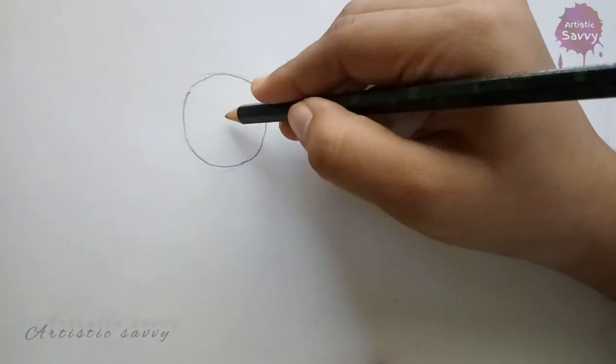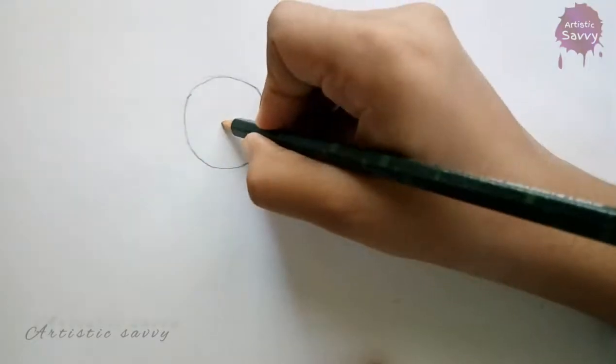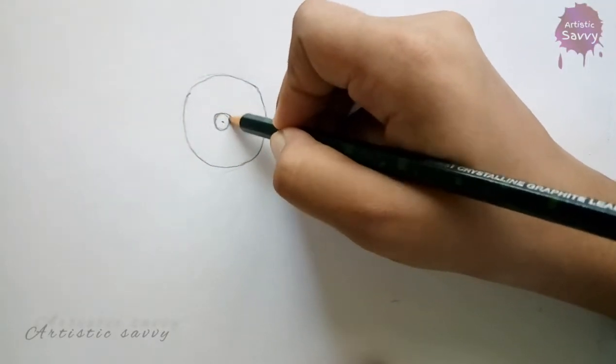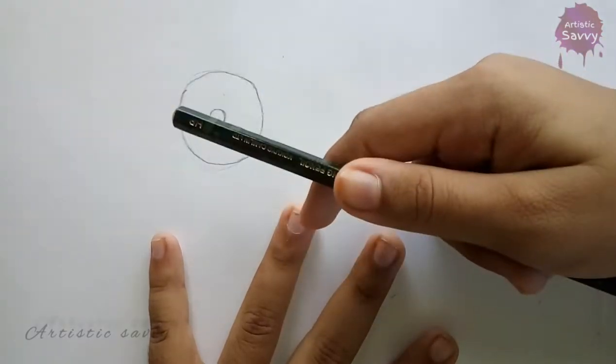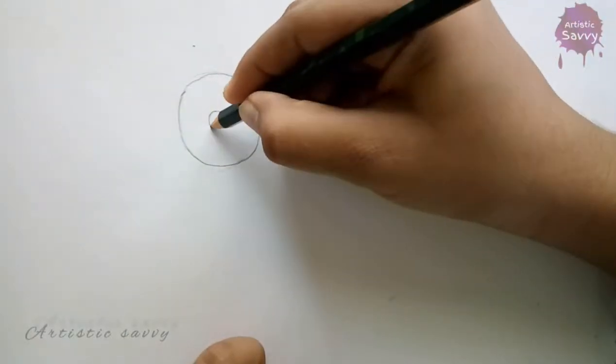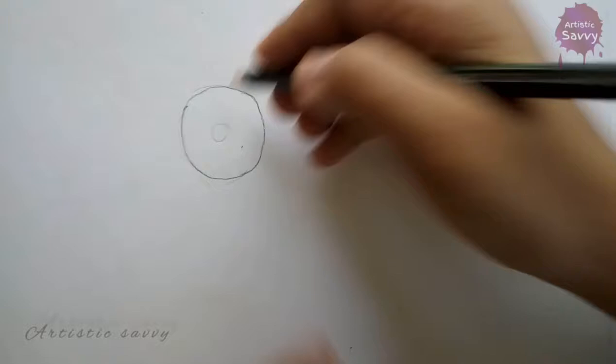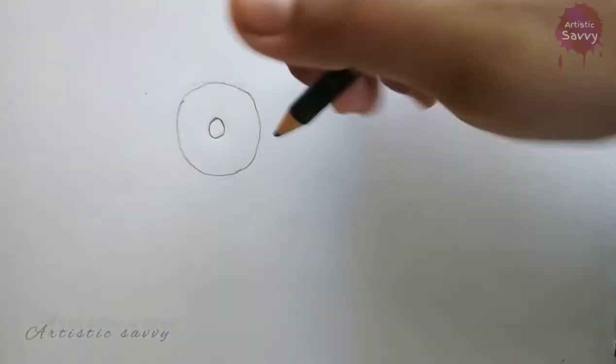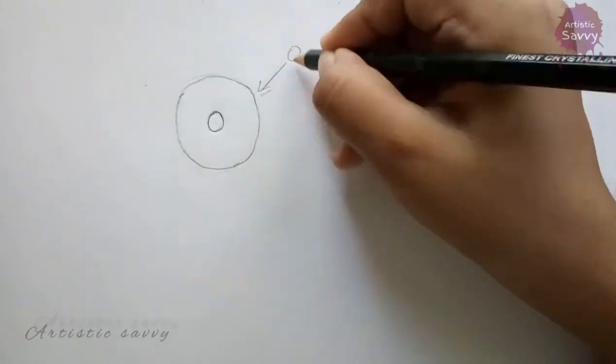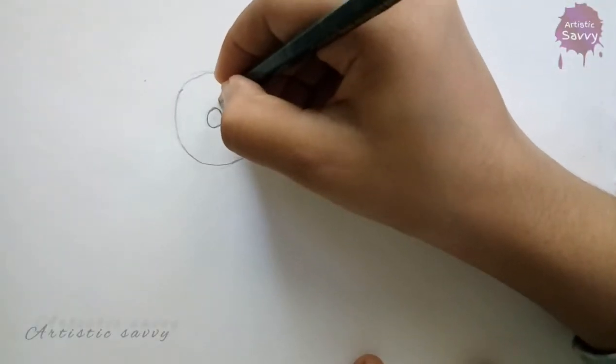The size of the pupil depends upon how much light enters the iris. I'm using an HP pencil to draw this. My light is coming from the top right, so I'll be drawing my highlight in the top right of my iris.